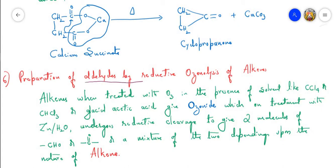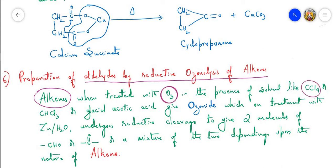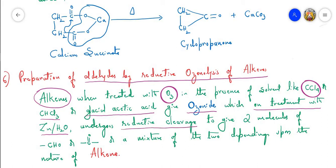Alkenes when treated with O₃ (ozone) in the presence of a solvent like carbon tetrachloride, chloroform, or glacial acetic acid give an intermediate compound called ozonoid, which is highly unstable. This compound on treatment with zinc and water undergoes reductive cleavage — meaning one oxygen atom of the ozonoid is lost to give two molecules of aldehyde or a ketone or a mixture of the two, depending upon the nature of the alkene.